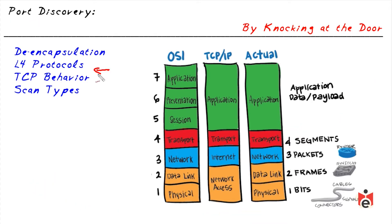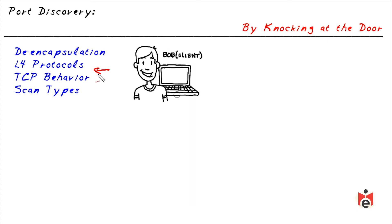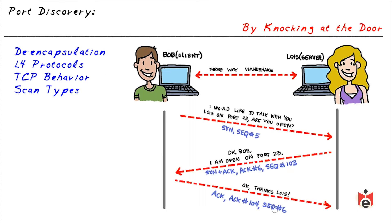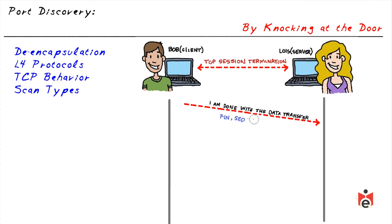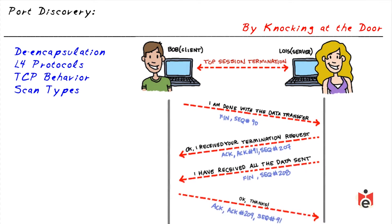Because these protocols operate in predictable ways, we can use tools that leverage those basic characteristics. This is an example of the traditional three-way handshake — the expected behavior when two devices set up a TCP session. Similar to saying goodbye at a party without a foul, TCP also completes its conversations in a certain manner.